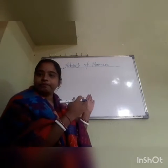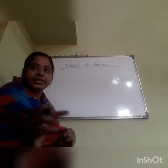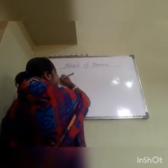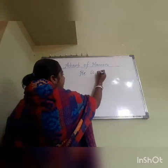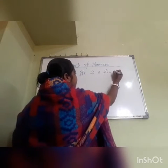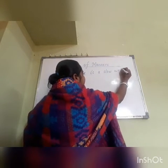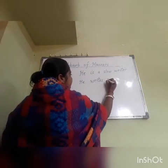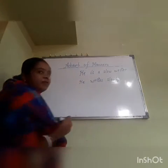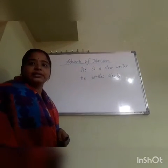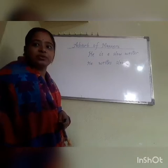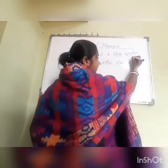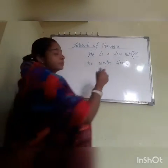To understand this adverb, you also need to know a bit about adjectives. I am writing here two sentences — have a look: 'He is a slow writer' and 'He writes slowly.' In the first sentence, 'writer' is a noun — a common noun — and 'slow' is an adjective.